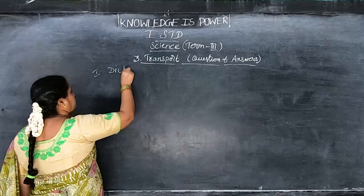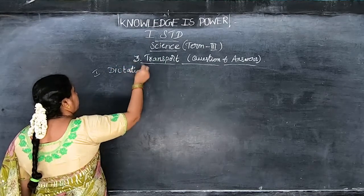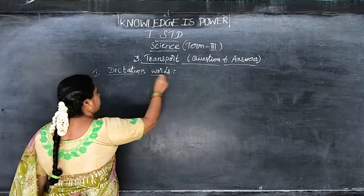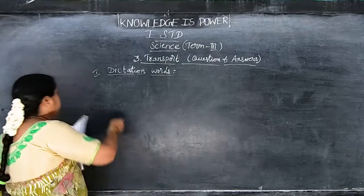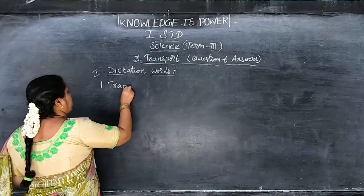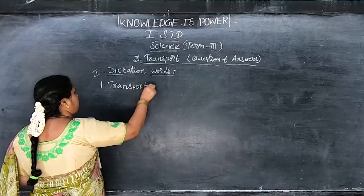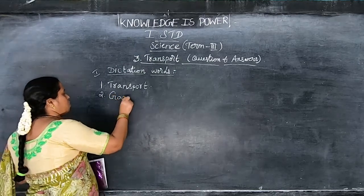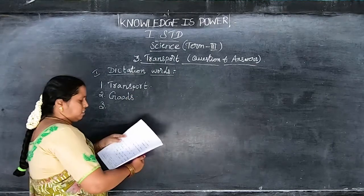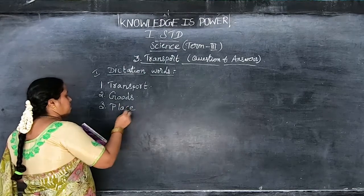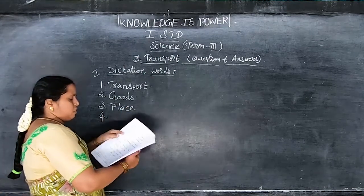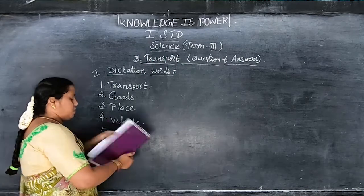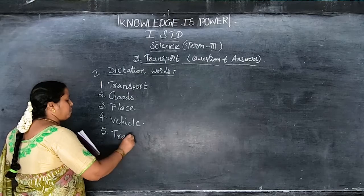Dictation work. In the previous class we finished the lesson, now we are writing the classwork. All take your note, children, and write. First one: transport, T-R-A-N-S-P-O-R-T. Next, goods: G-O-O-D-S. Third one, place: P-L-A-C-E. Fourth one, vehicle: V-E-H-I-C-L-E. Fifth one, travel: T-R-A-V-E-L.